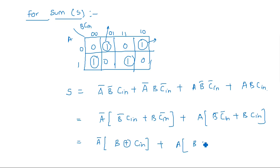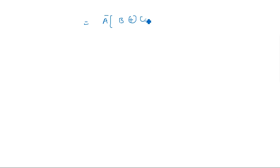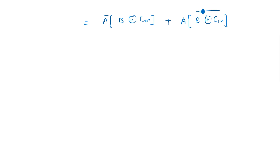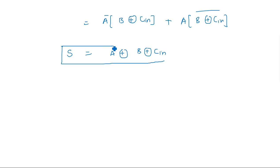The second bracket B̅Cin̅ + BCin is the XNOR operation between B and Cin. The relation between XOR and XNOR is that they are complements of each other — XNOR complement is XOR, and XOR complement is XNOR. So S = A̅(B XOR Cin) + A(B XOR Cin)̄, which is in the format A̅B + AB̅ — this is again an XOR operation.